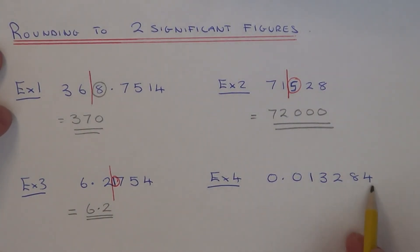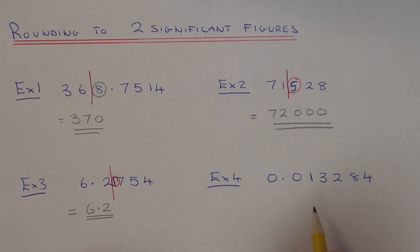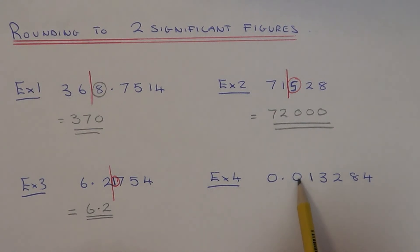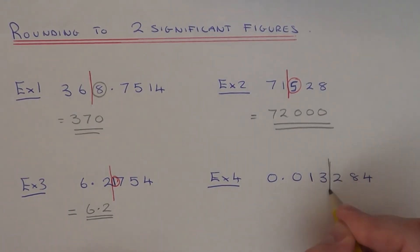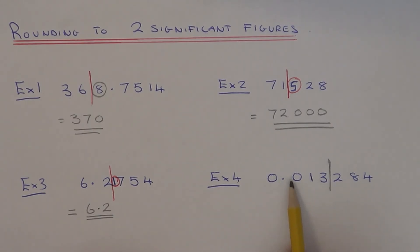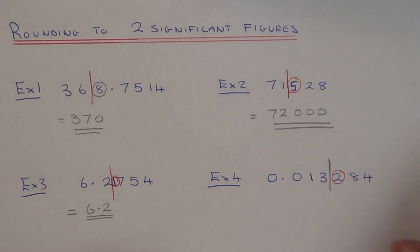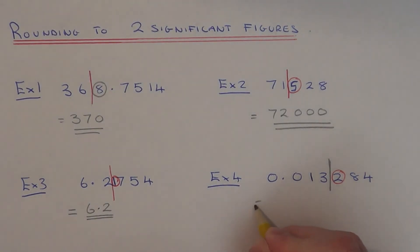This time we've got 0.013284 to round to two significant figures — that's two non-zero digits from the start. We need to ignore these first zeros here, so our first figure will be the 1 and the second one will be the 3, and we put the line in here. The two possible answers are 0.013 if I round it down, or 0.014 if I round it up. We just need to look at the number after the line, which is a 2. Since that is less than 5, we round the number down and keep it the same — so it's 0.013.